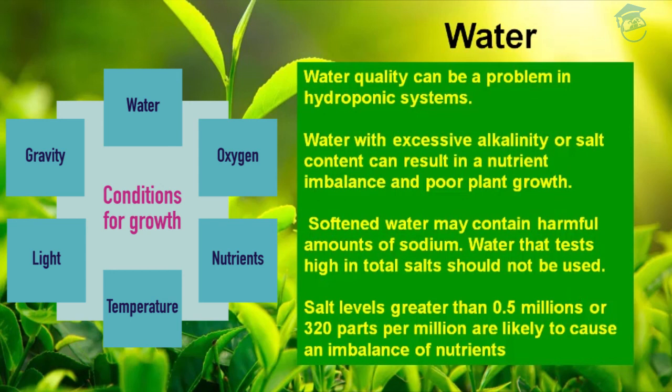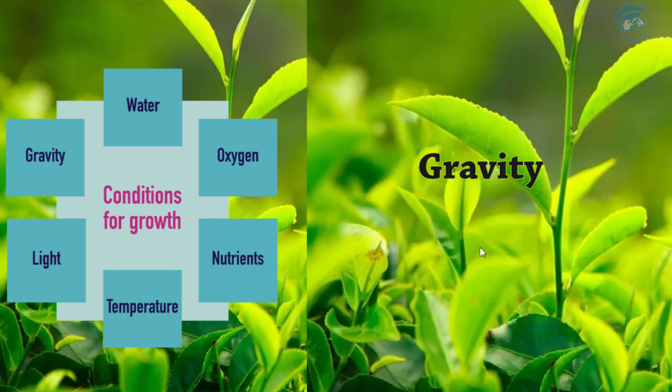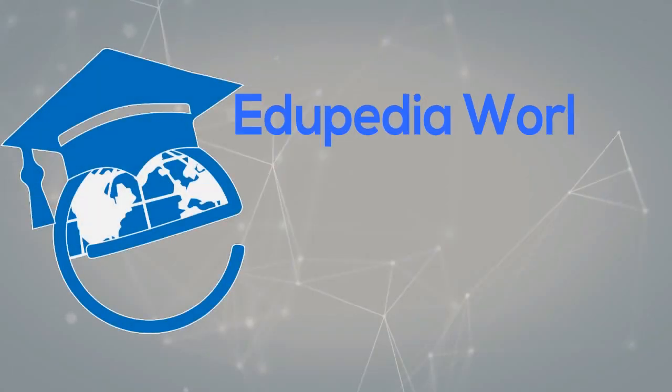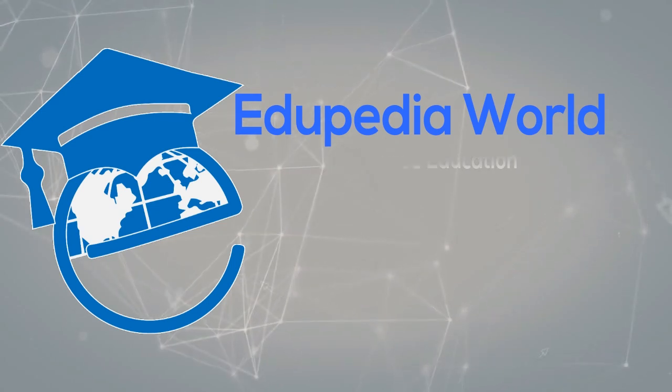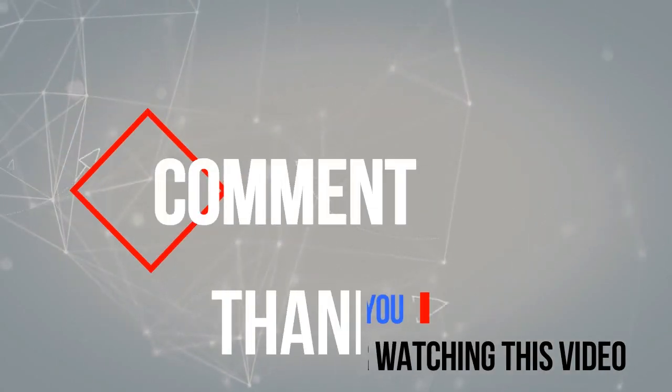The sixth and last factor important for plant growth and development is gravity. Gravity is also very important. Any deviation from this range could be detrimental to plant survival, and gravity affects certain phases or stages of growth. Stay tuned and keep watching EtiPedia World videos. Thank you.